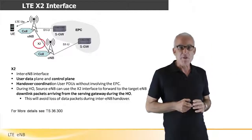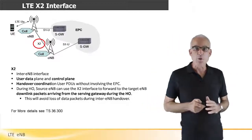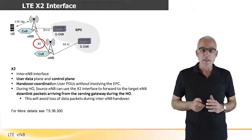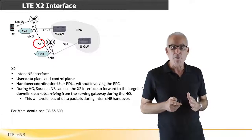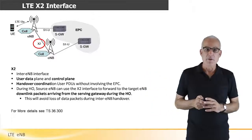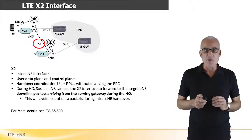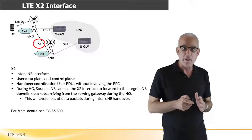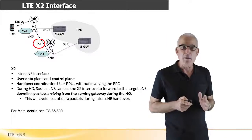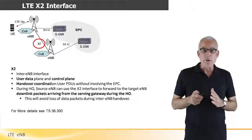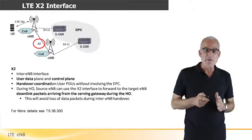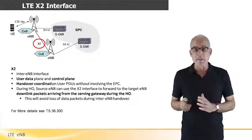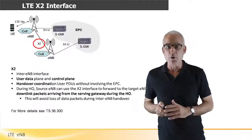The X2 interface is used to connect between E0Bs and provide user data and control messages between them. The X2 interface is mainly used for the end-over process. During the end-over process, end-over control messages are transferred between the source E0B and the target E0B. In addition, the source E0B forwards to the target E0B the packets arriving from the serving gateway during the end-off. This avoids loss of data packets during inter-E0B end-over.